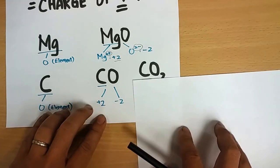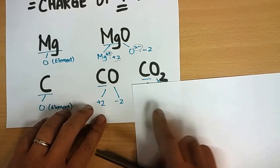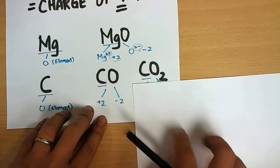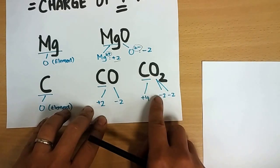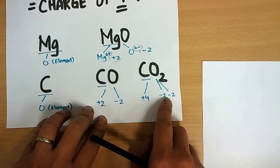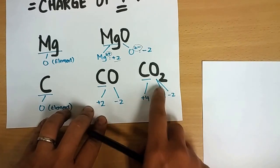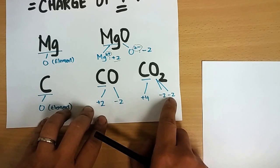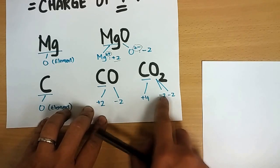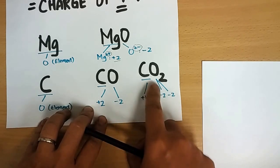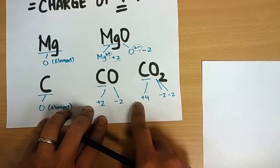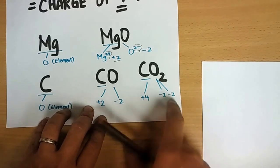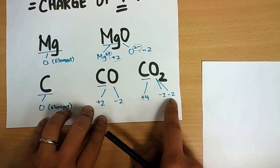Now for CO₂ with two oxygen atoms: the oxidation state of one oxygen is minus two. We don't sum them up — oxidation state is just for one atom. So with two oxygens each at minus two, carbon must be plus four so that everything sums to zero.